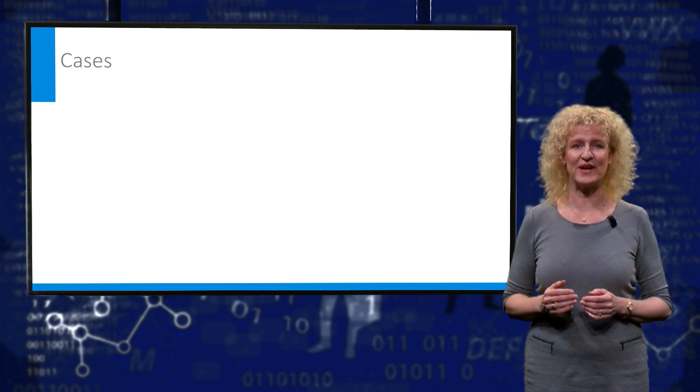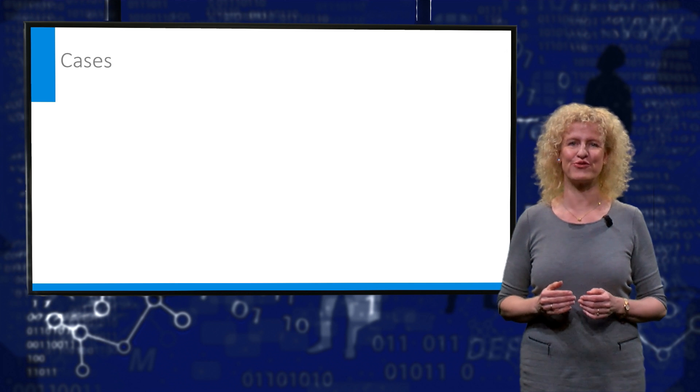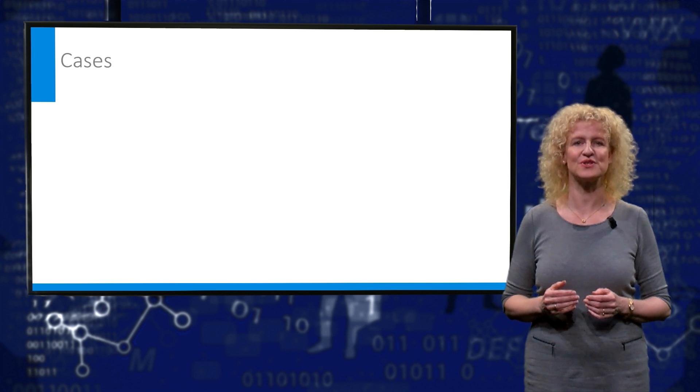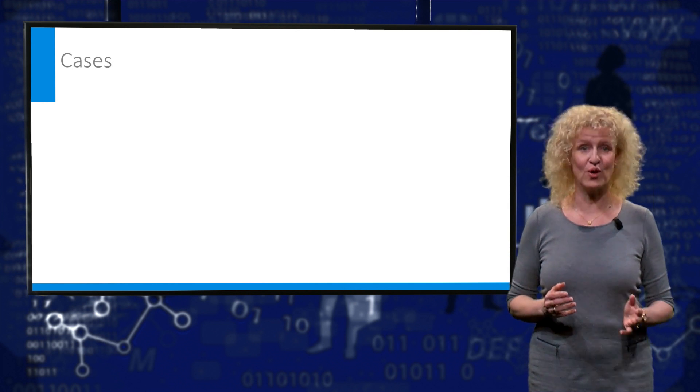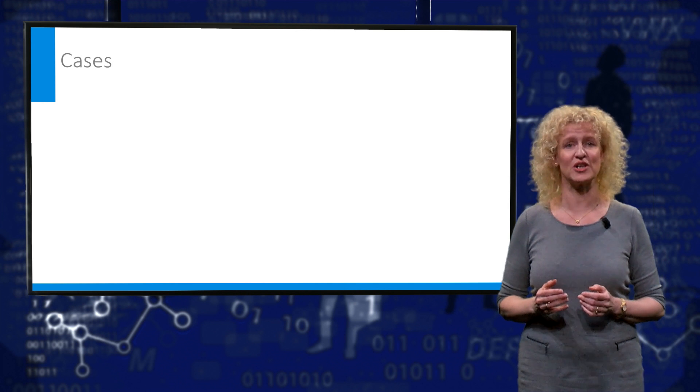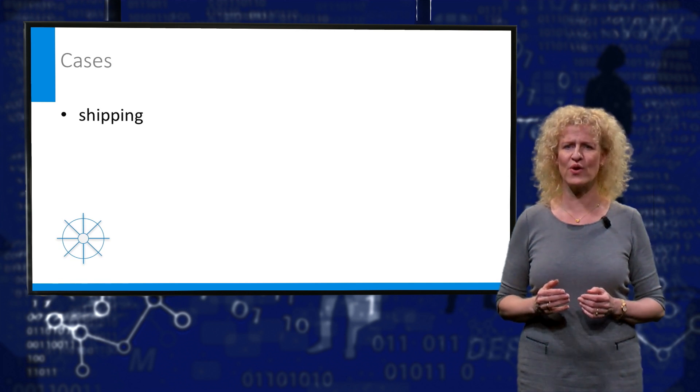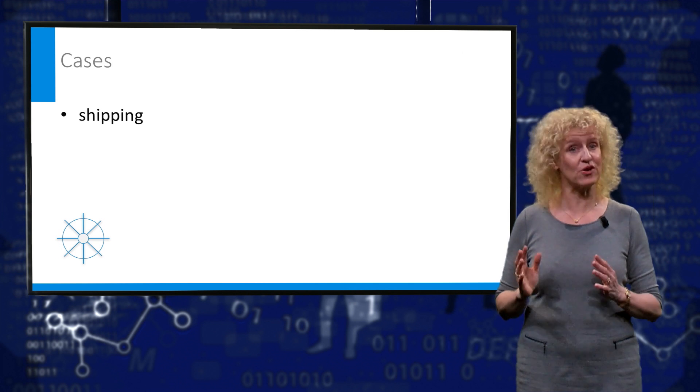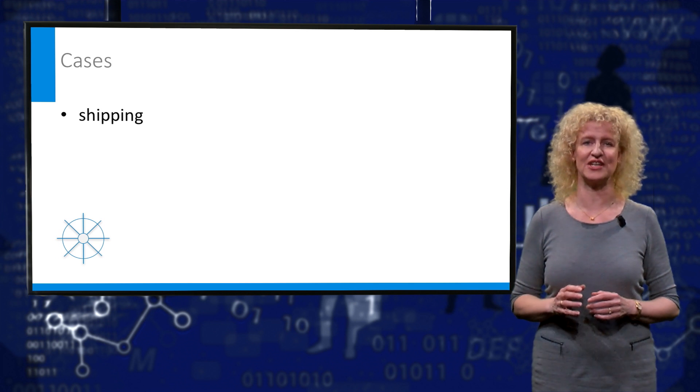The three cases we provide information about are rather different regarding their big data induced changes. First of all we present transportation by shipping to you, a global sector with a strong existing network and a set of rules that cannot be easily changed.